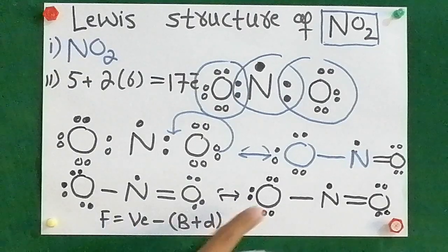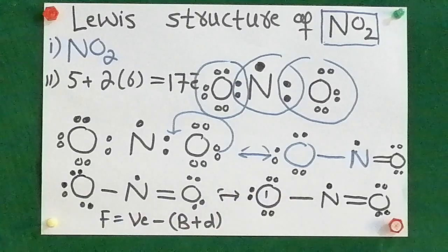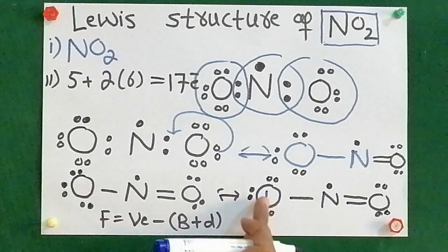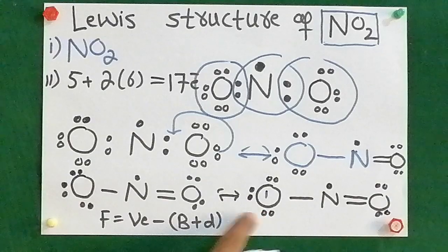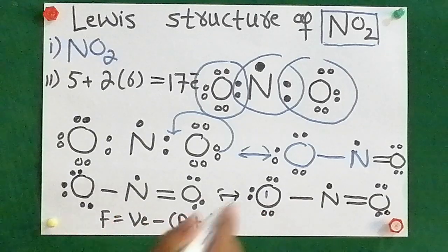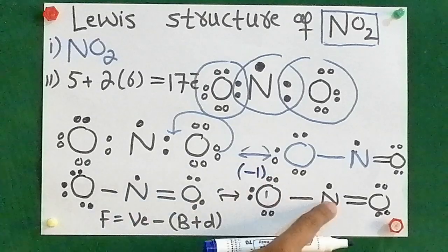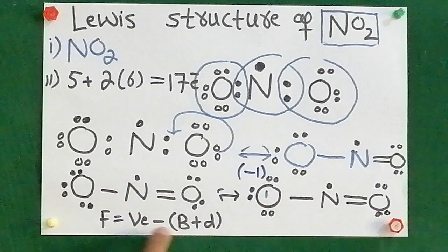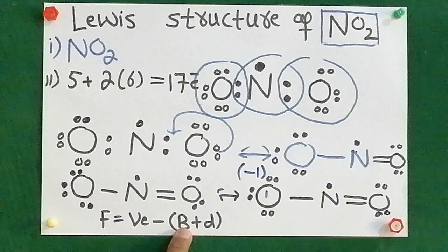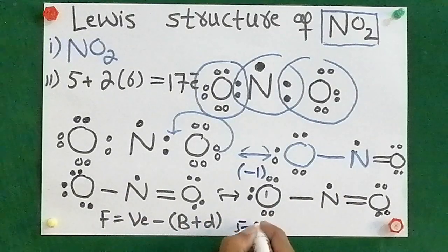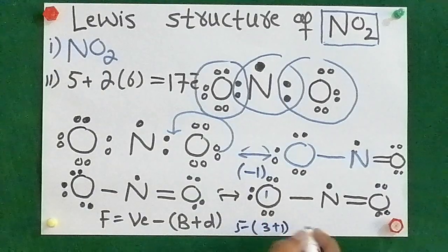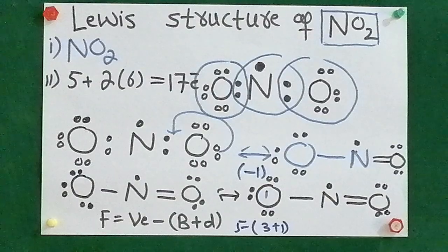First, for oxygen number one: valence electrons are six, bonds one, dots six — so six minus seven gives minus one. For nitrogen having one dot: five valence electrons, and we observe how many bonds form — three bonds — so five minus three plus one dot.